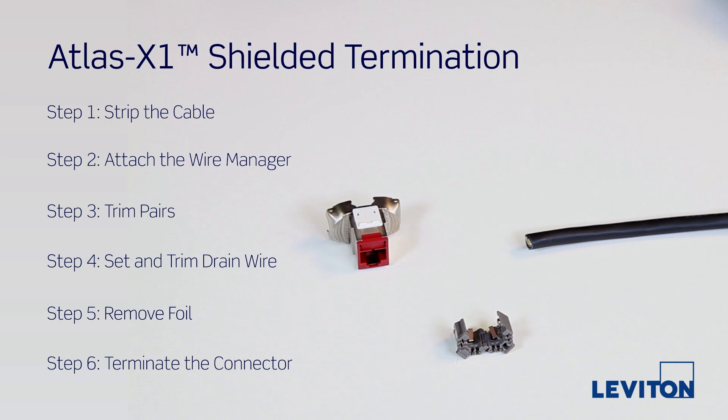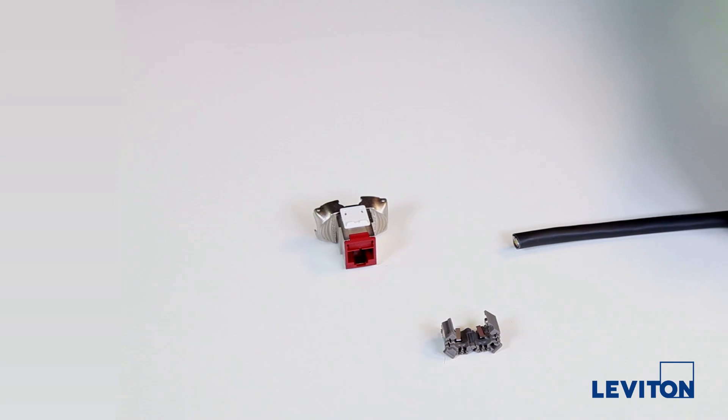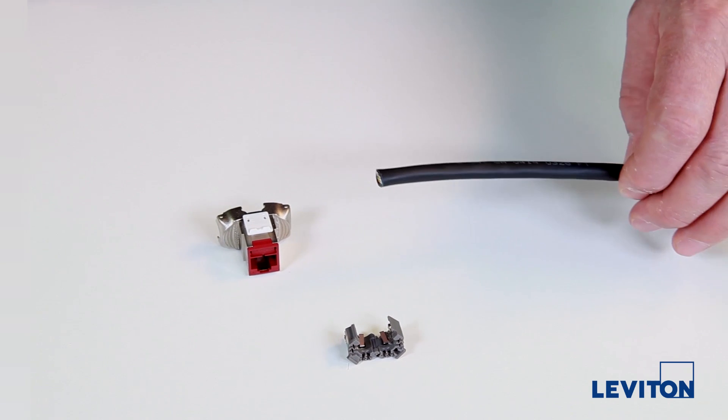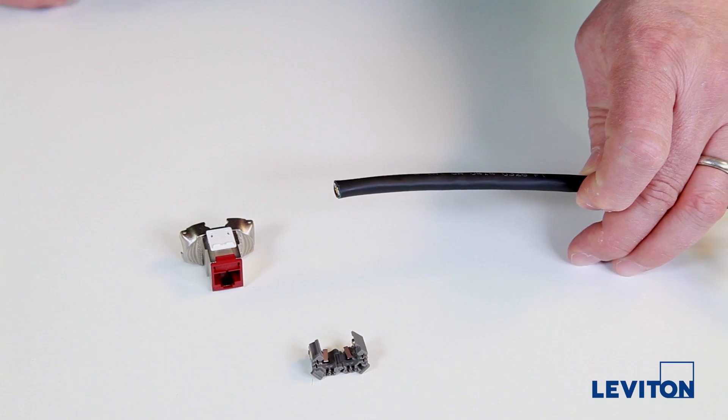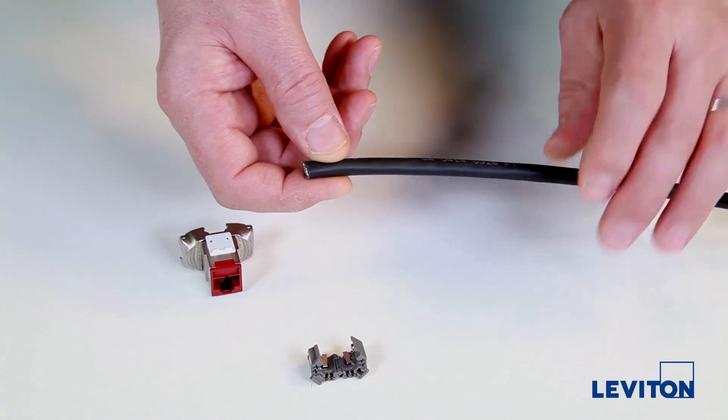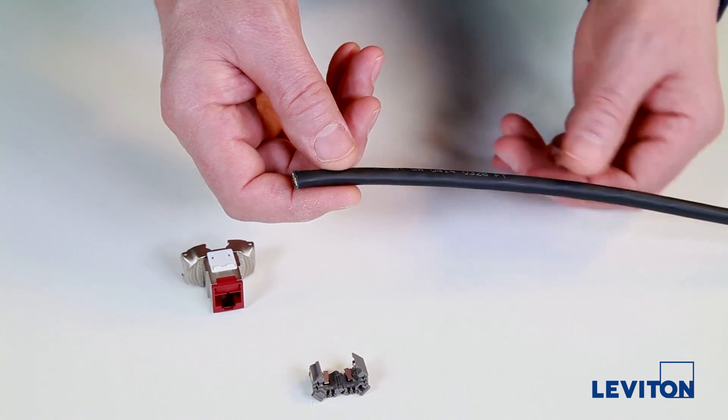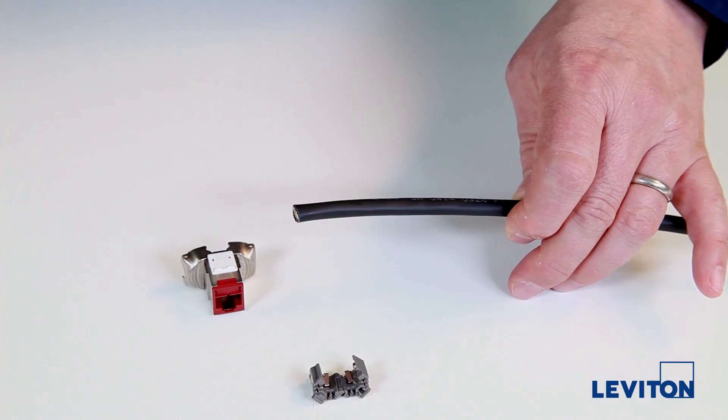Today we'll be showing you how to terminate the Leviton Atlas X1 CAT 6A shielded connector with CAT 6A FUTP cable. Since Atlas X1 connectors are designed on a unified form factor, termination steps are similar across all categories.